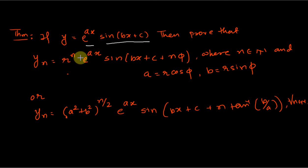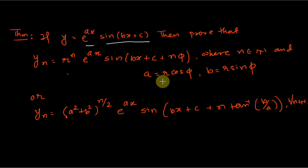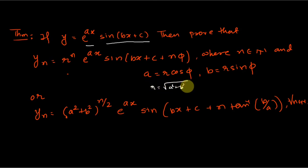By observation, one can say that the nth derivative of this function — which is a product of an exponential function and a trigonometric function — is r^n · e^(ax) · sin(bx + c + nφ), where r and φ are defined as a = r cos φ and b = r sin φ, which also can be written as r = √(a² + b²) and φ = tan⁻¹(b/a).